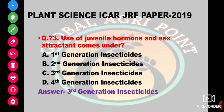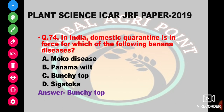Use of juvenile hormone and sex attractants comes under the 1st generation insecticide, 2nd generation insecticide, 3rd generation insecticide, or 4th generation insecticide. The answer is 3rd generation insecticide.